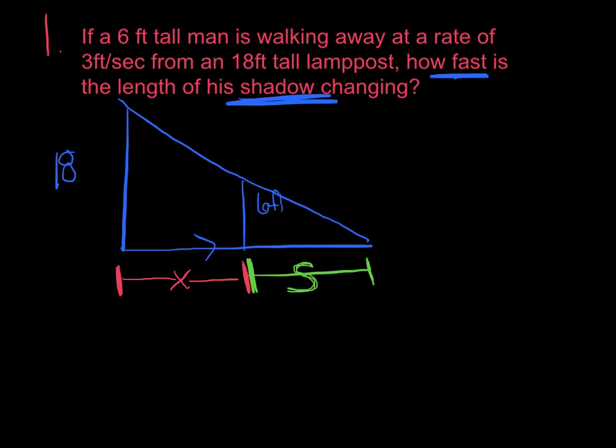And now the question is saying, now that I have some variables, again, how fast is his shadow changing? So based off this, I am finding the rate of change of s with respect to time, ds/dt.